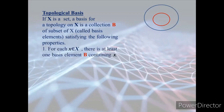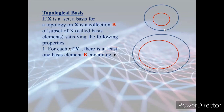Condition 1: for each x member of x, there is at least one basis element B containing x. So if the x elements are x, y, z, then each of x, y, z should be contained in at least one of the basis elements — the basis must cover all elements of x.